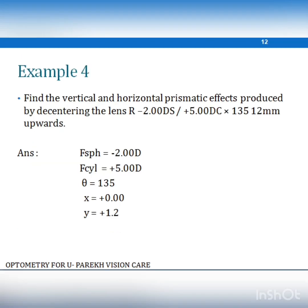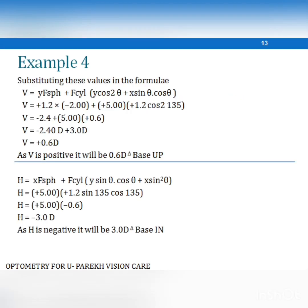In Example 4, a sphero-cylindrical lens is decentered 12 mm upward in front of the right eye, where the spherical power is −2 diopters, the cylindrical power is +5 diopters, the axis is 135°, and the vertical deviation y is 1.2 cm. Substituting these values, the vertical deviation results in −2.4 + 3.0 = 0.6 prism diopters in the base-up direction. For the horizontal deviation, the cylindrical component gives +5 × (−0.6), resulting in 3 prism diopters in the base-in direction.